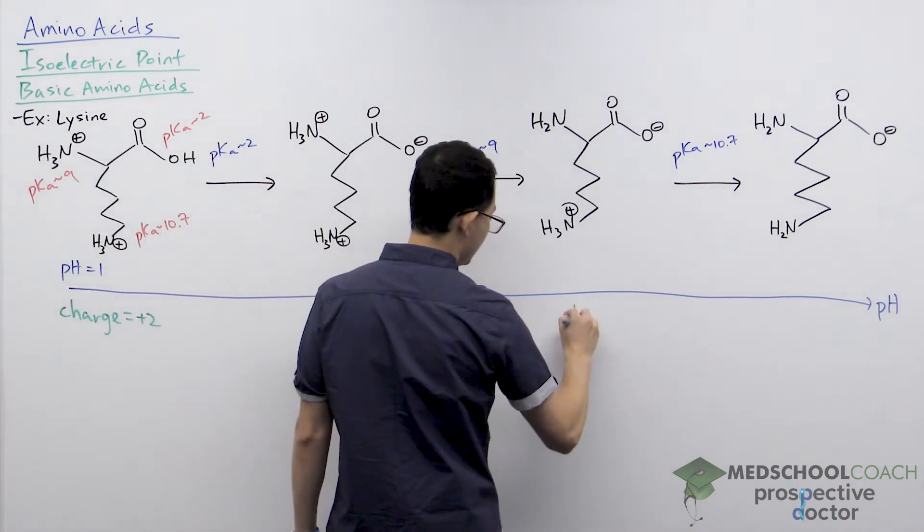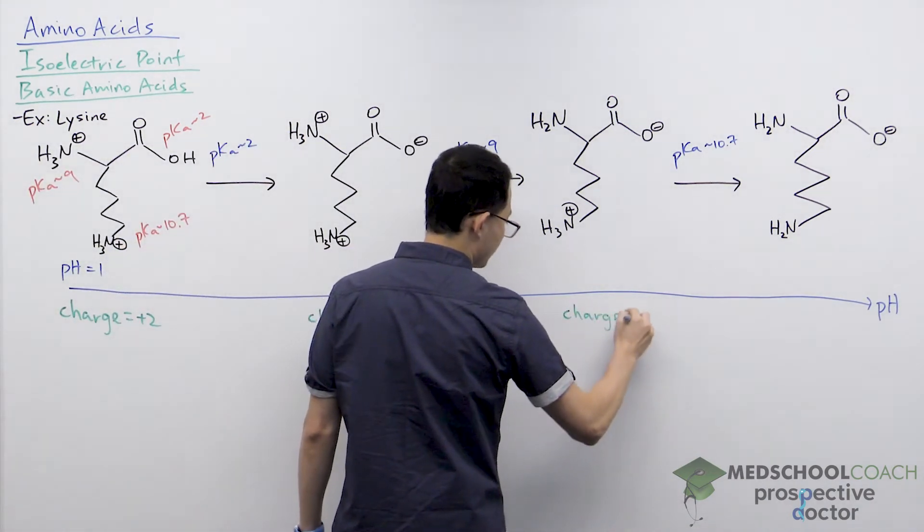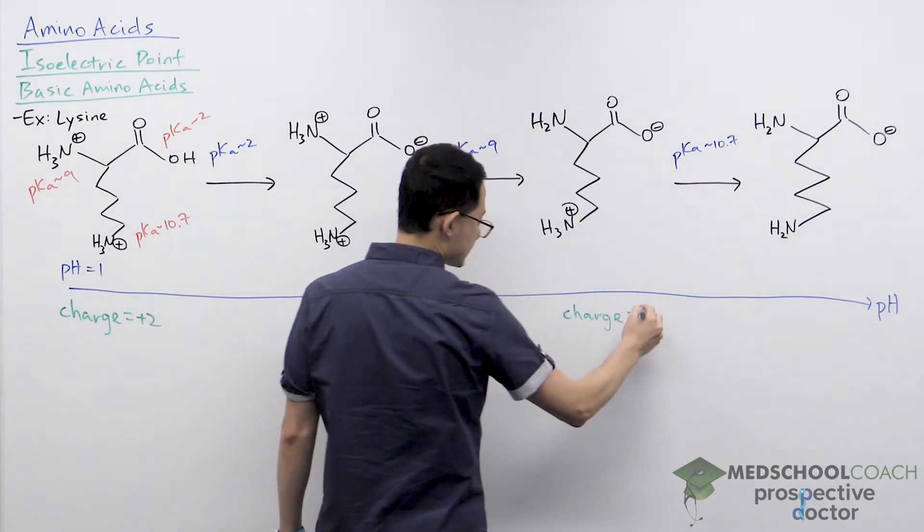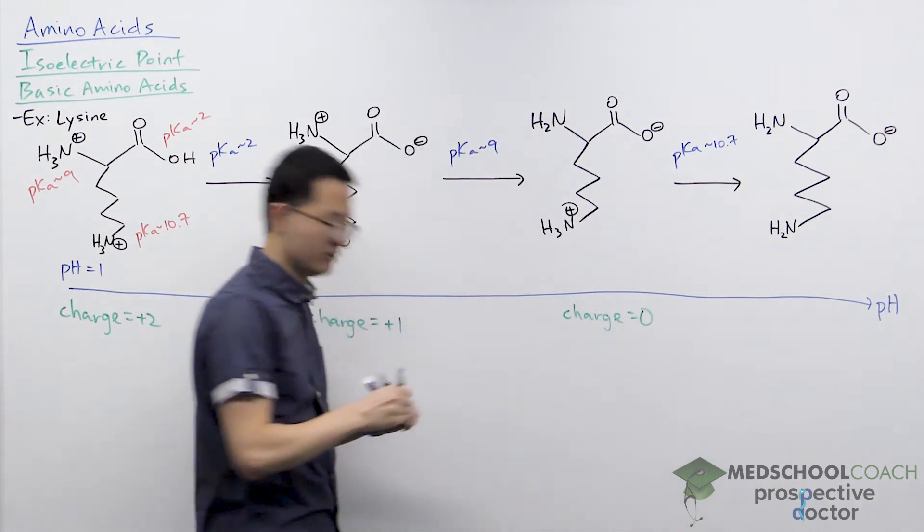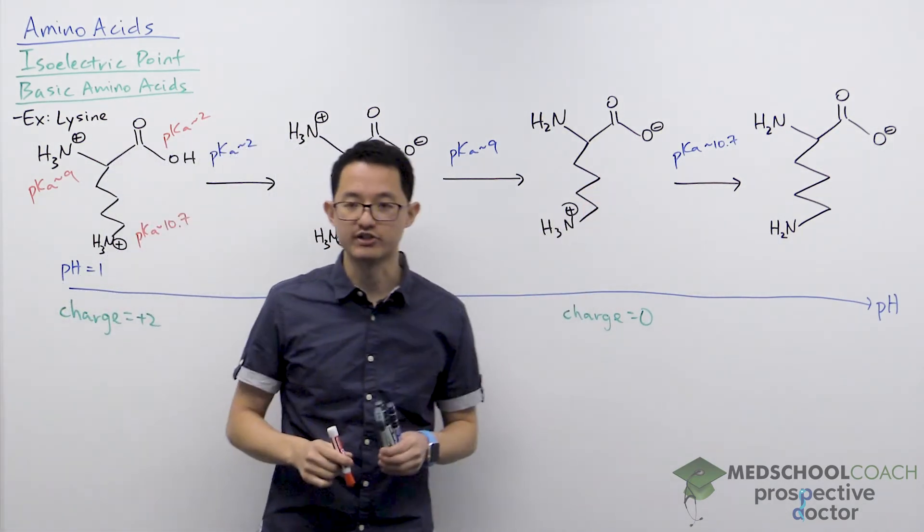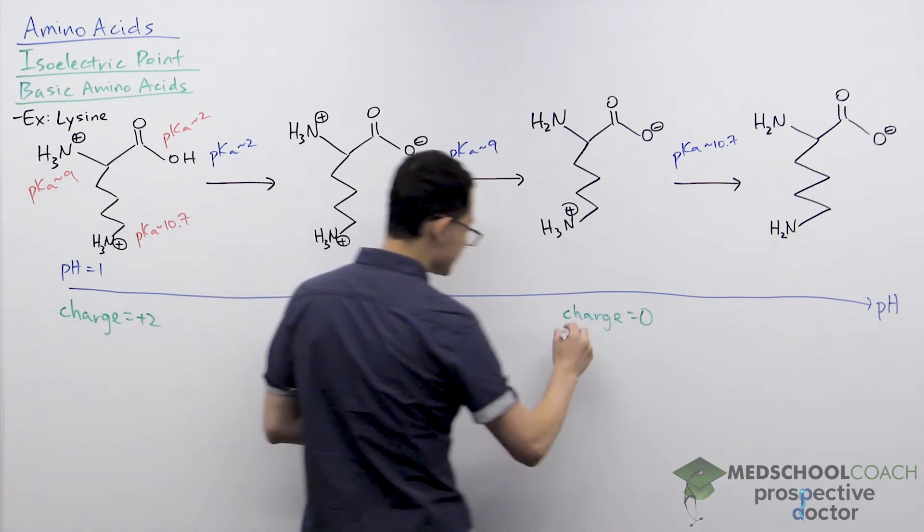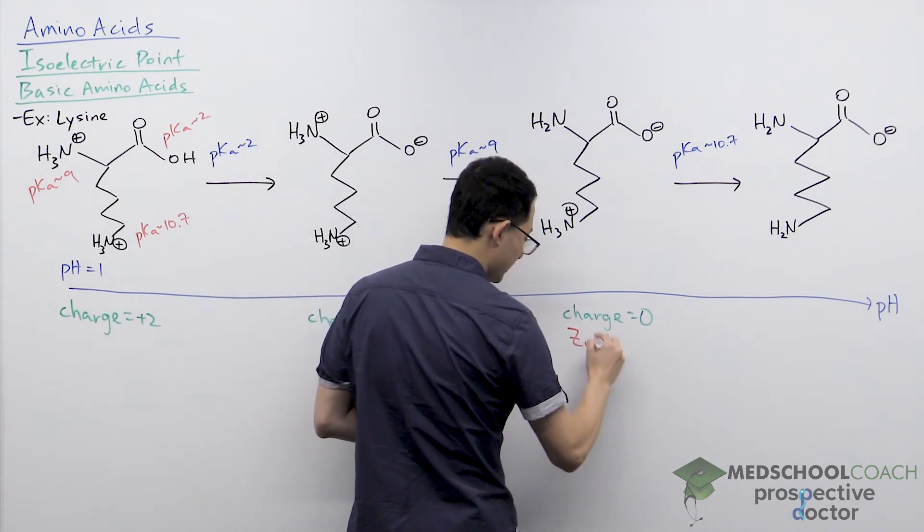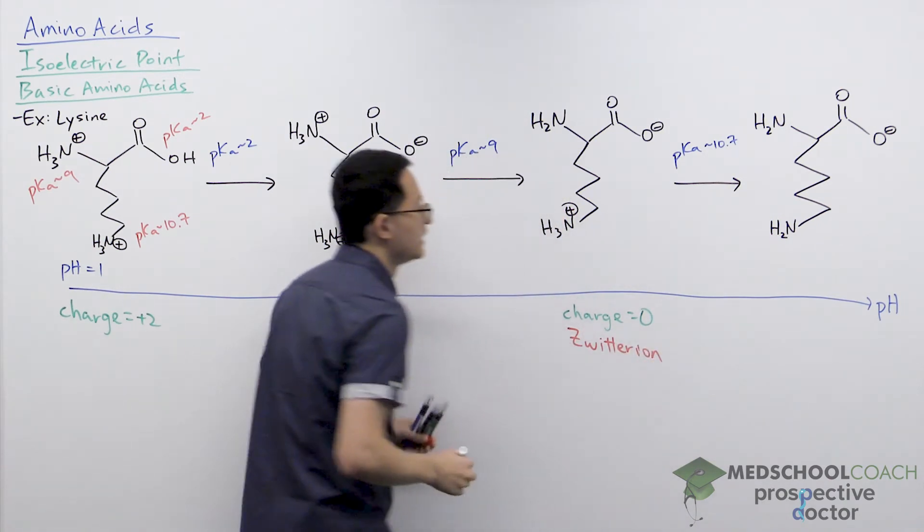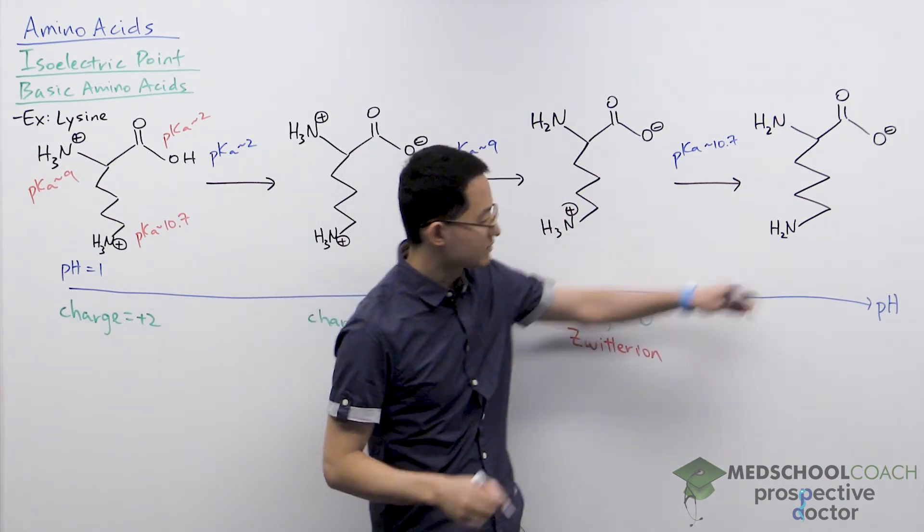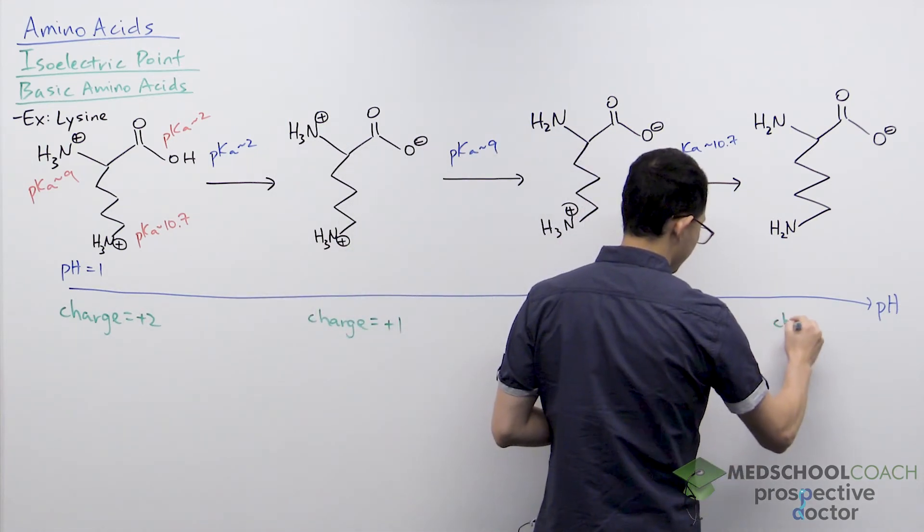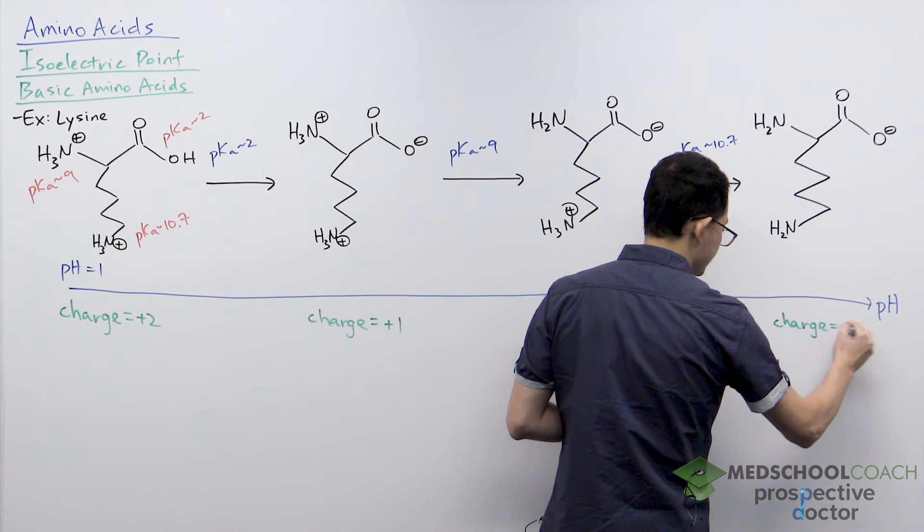Our third molecule has charges of +1, 0, and -1, so that's a charge of 0. Since this molecule has both positive and negative charges but the net charge is 0, this species is our zwitterion. Finally, this last molecule has only a single negative charge, so this charge is -1.